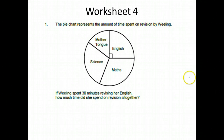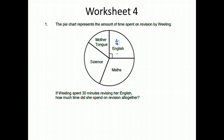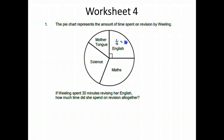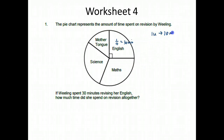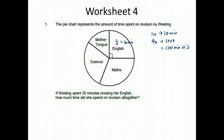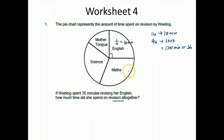Worksheet 4. The pie chart represents the amount of time spent on revision by Wheeling. Here there is one quarter. If Wheeling spent 30 minutes revising English, then English is 30 minutes, so 1 unit is 30 minutes. 4 units would be 30 times 4, which is 120 minutes or 2 hours. So altogether she spent 2 hours on revision.